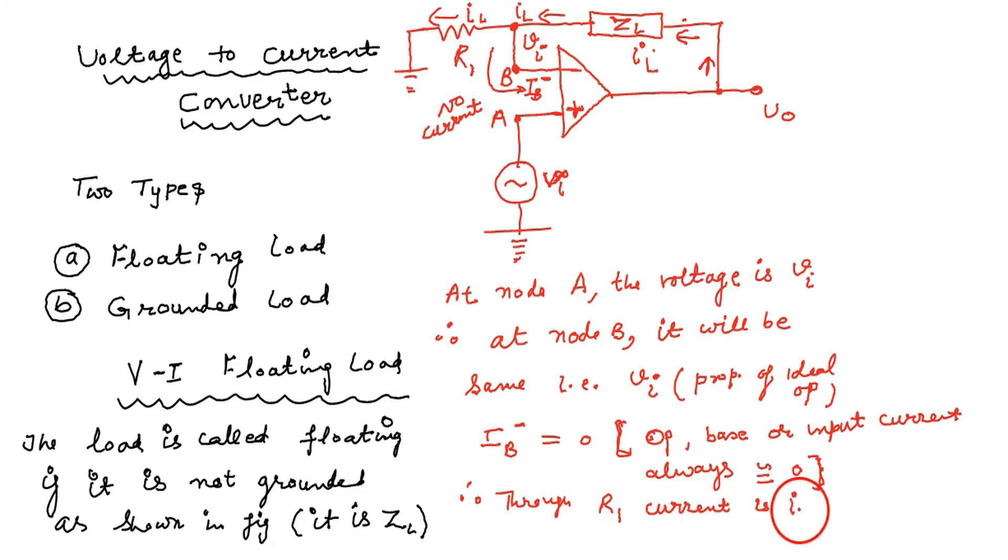Through R1 the current is IL. Now let us write the voltage potential difference across R1 and write the current also. Current is IL equals to voltage difference VI minus 0 upon R1.